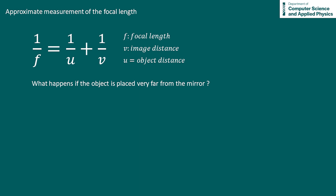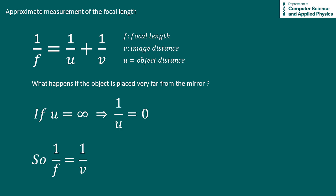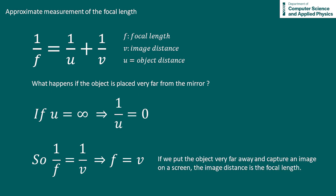Now what happens to this formula if our object distance u is very large or infinitely far away? One over u will go to zero and our lens formula becomes one over f equals one over v, so v is equal to f. The focal length is the image distance under these conditions. Basically, if we can capture an image of an object that is far away from our mirror, the distance from the screen to the mirror is equal to the focal length.